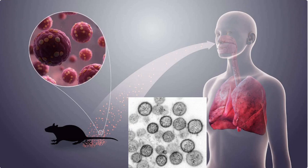HPS is prevalent in the Americas, while HFRS occurs in Europe and Asia. Hantavirus is typically contracted by inhaling aerosolized particles of urine, feces, or saliva from infected rodents. The mortality rate varies depending on the specific strain, ranging from 1% to 15%.